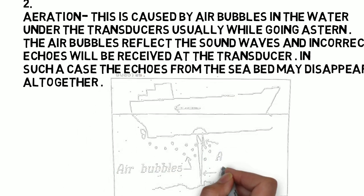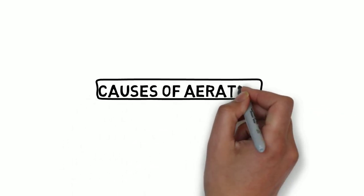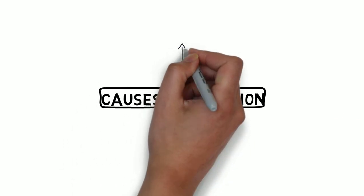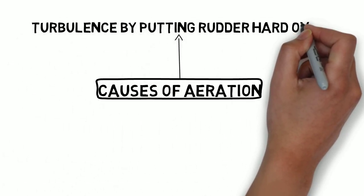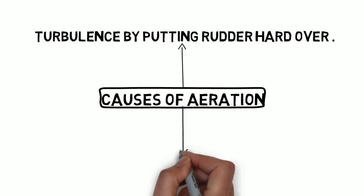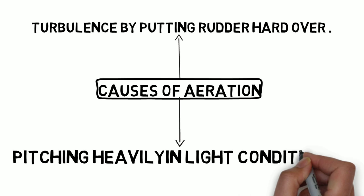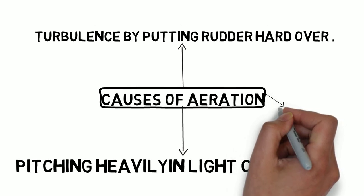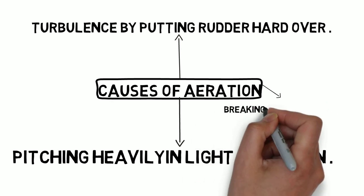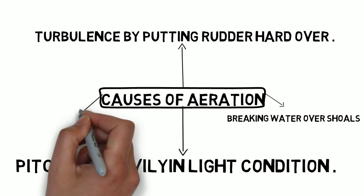The causes of aeration are, for example: turbulence by putting rudder hard over, pitching heavily in light condition, breaking water over soles, sailing through water where bad weather has left pockets of air bubbles.